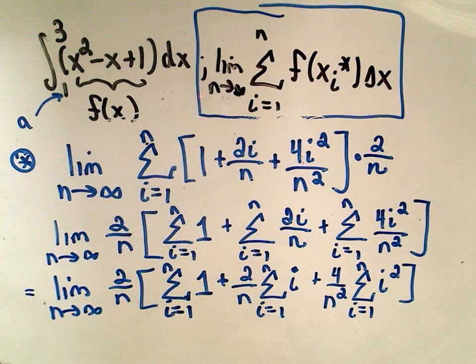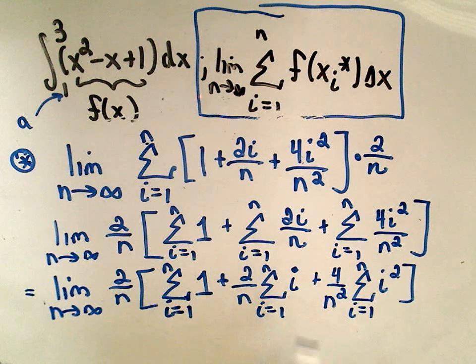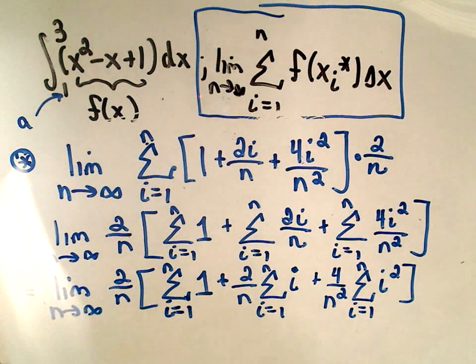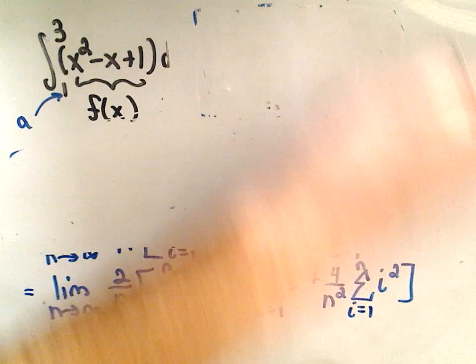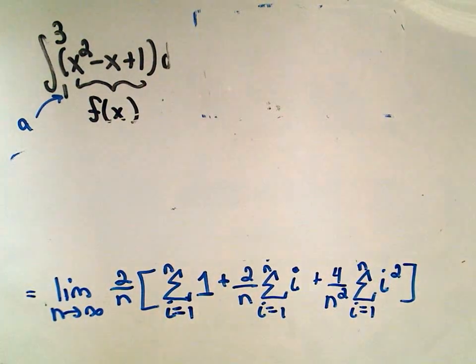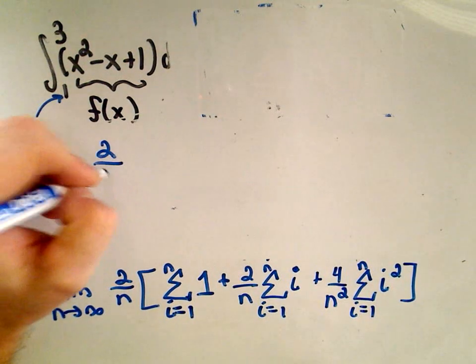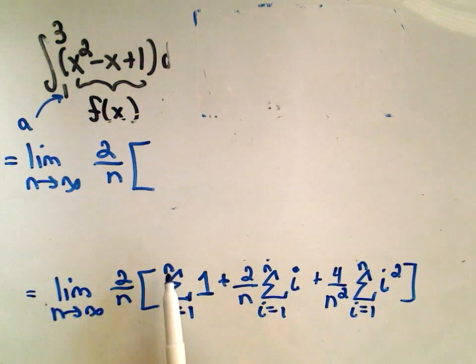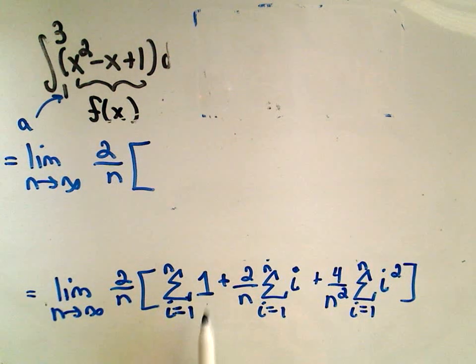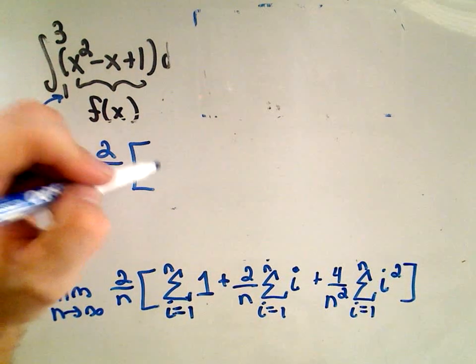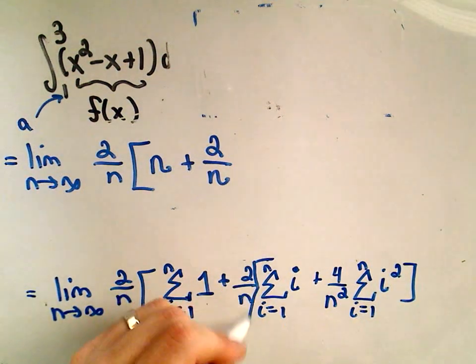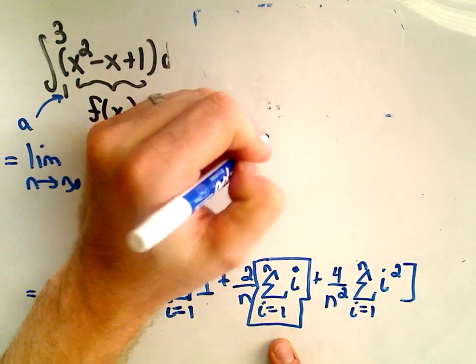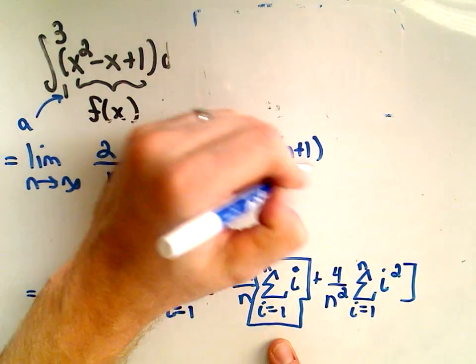Okay, so now I'm going to use these three formulas about the summations that I had shown in the very first video. Let's give myself a little more room here. So we still have the limit as n goes to infinity, 2 over n. Remember, if we sum up from 1 to n, we're summing the number 1 n times. So we'll just get n times 1, or n. Then I have my 2 over n. But we said we can replace the summation from i equals 1 to n with the value n times n plus 1 over 2.